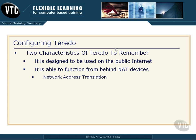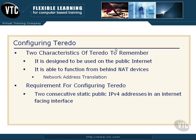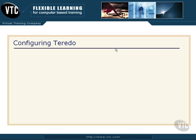That's a big selling point for Teredo as a transition technology for IPv6. One of the main requirements for configuring Teredo is that you have to have two consecutive static — notice that word, static — public IPv4 addresses on an internet-facing interface. So you'll have to have two static addresses facing the internet.